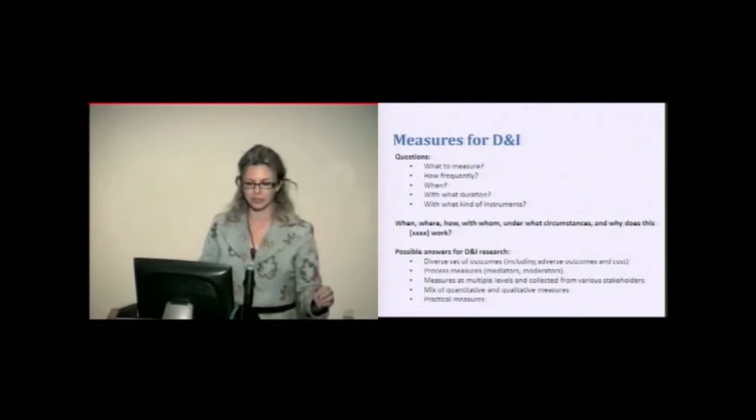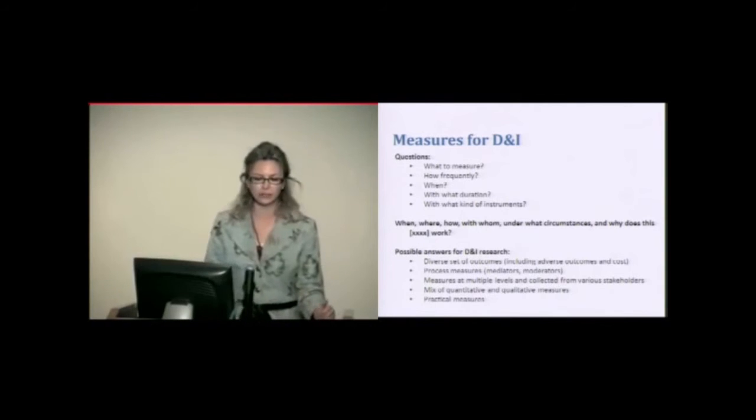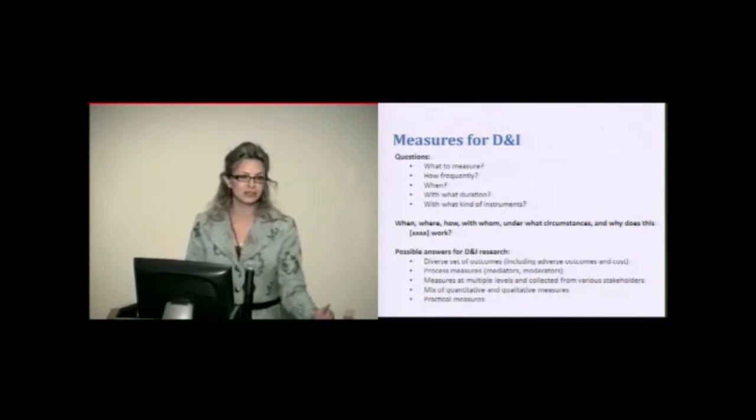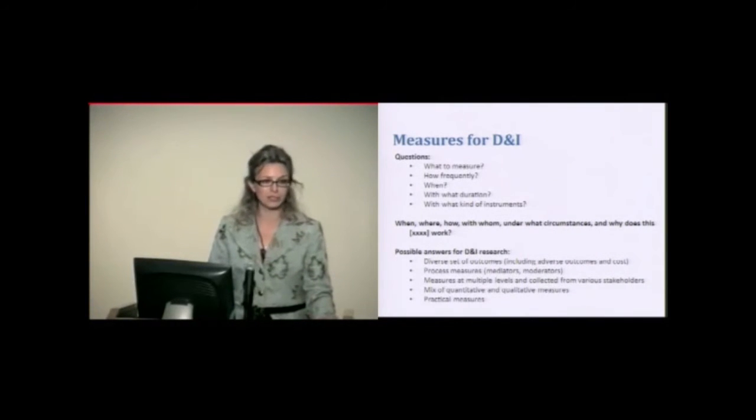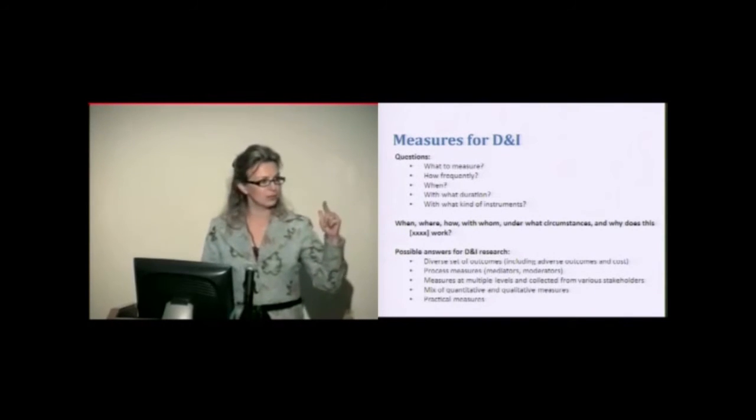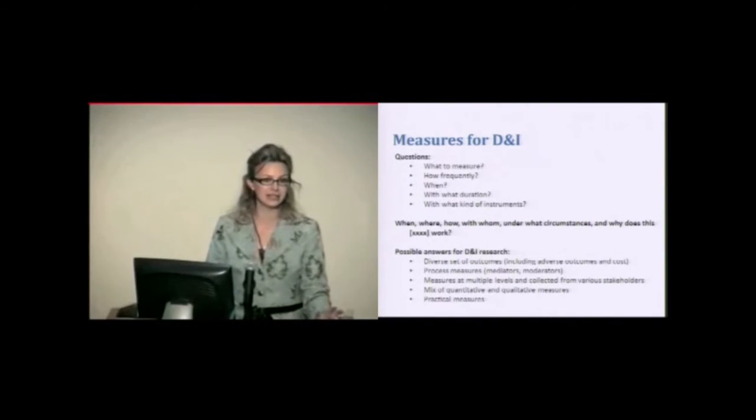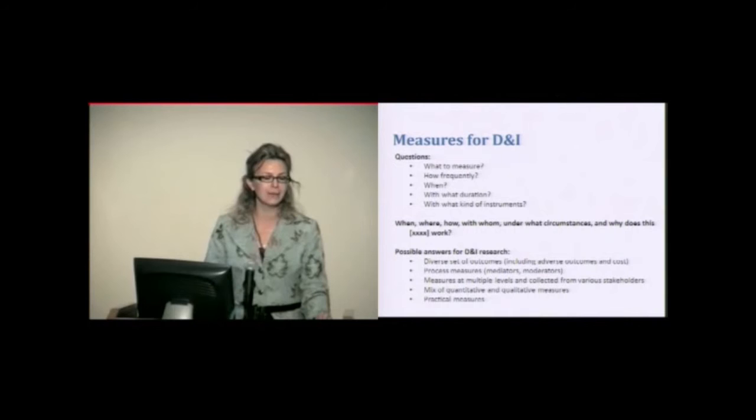A few possible answers for DNI research might be to use diverse set of outcomes, including adverse outcomes and cost. We heard in the previous panel that most of the studies actually did account for cost, which I was really excited to hear, and I wanted to ask more about it. Using and collecting not only outcome measures, but also process measures, which will provide some understanding of why something happened in a certain way. Measuring at multiple levels, we talked about the multi-level approaches, and collecting data from various stakeholders, using a mix of quantitative and qualitative data. And then finally, I'm not going to go further, but practical measures would be important. Someone will actually talk today about what practical measures might mean in terms of DNI.